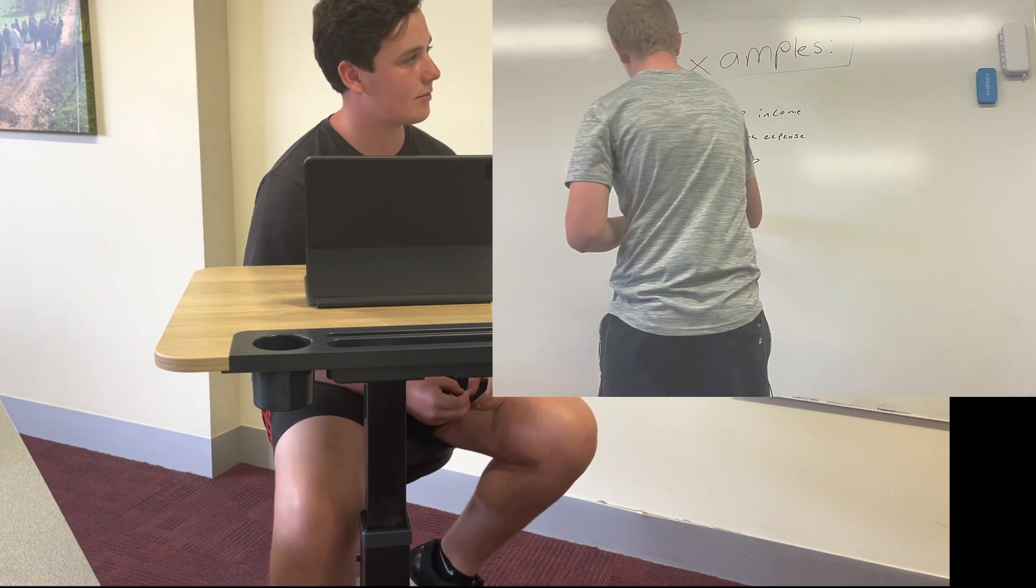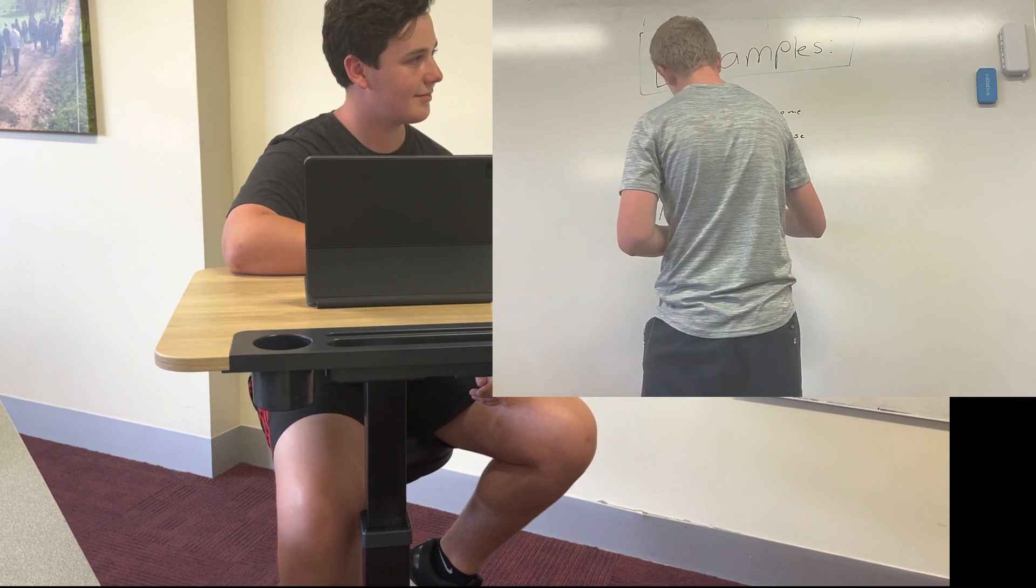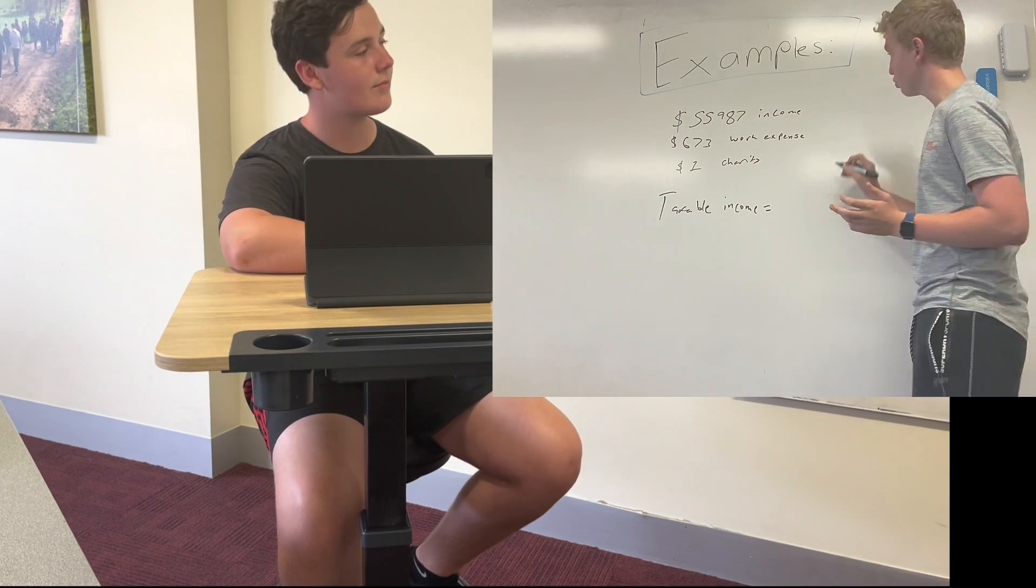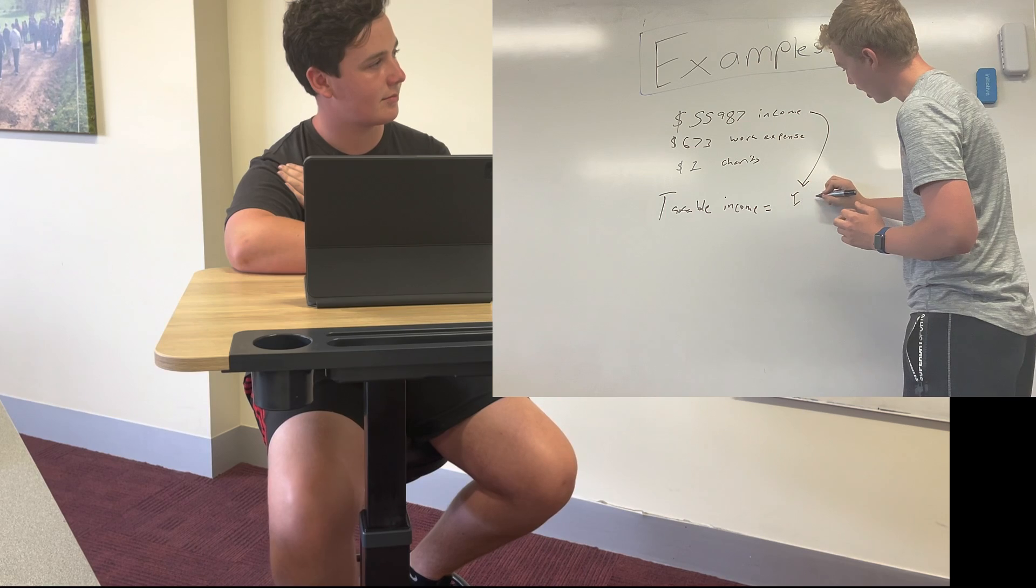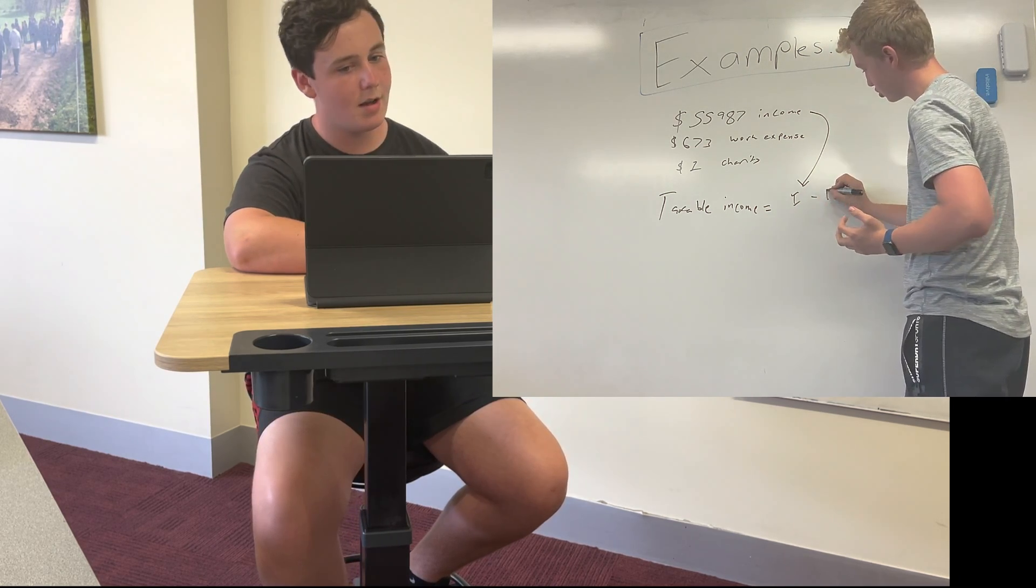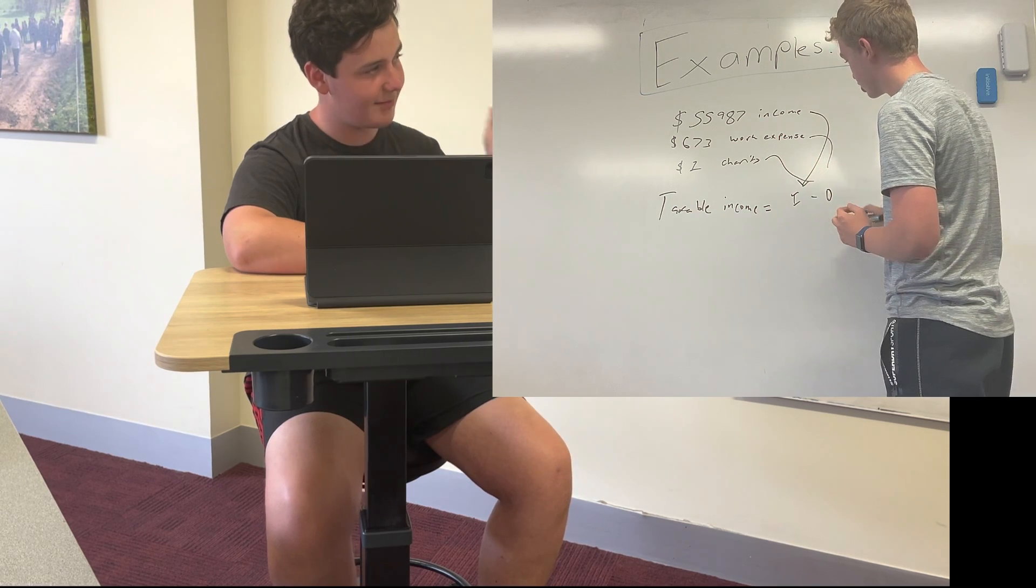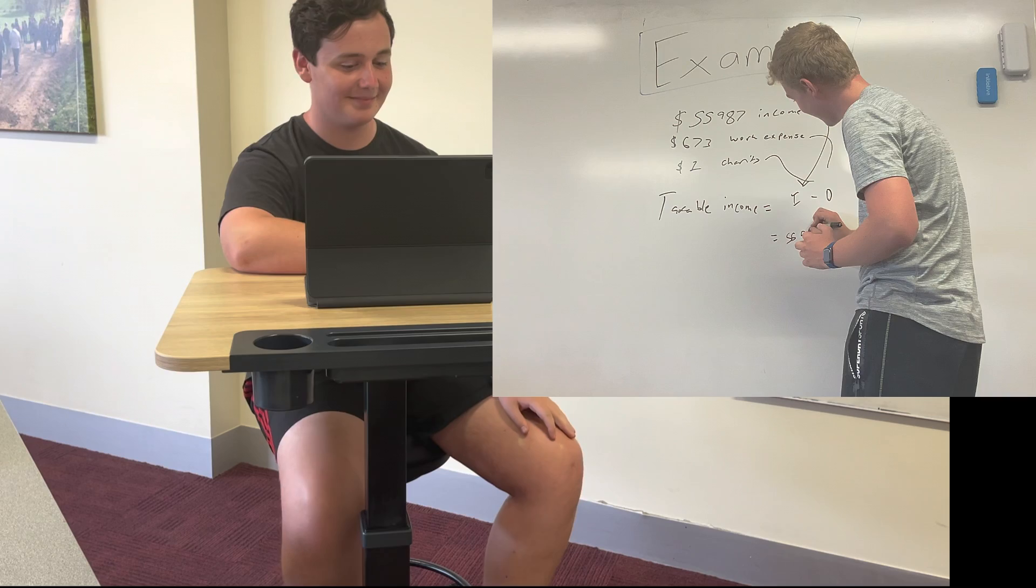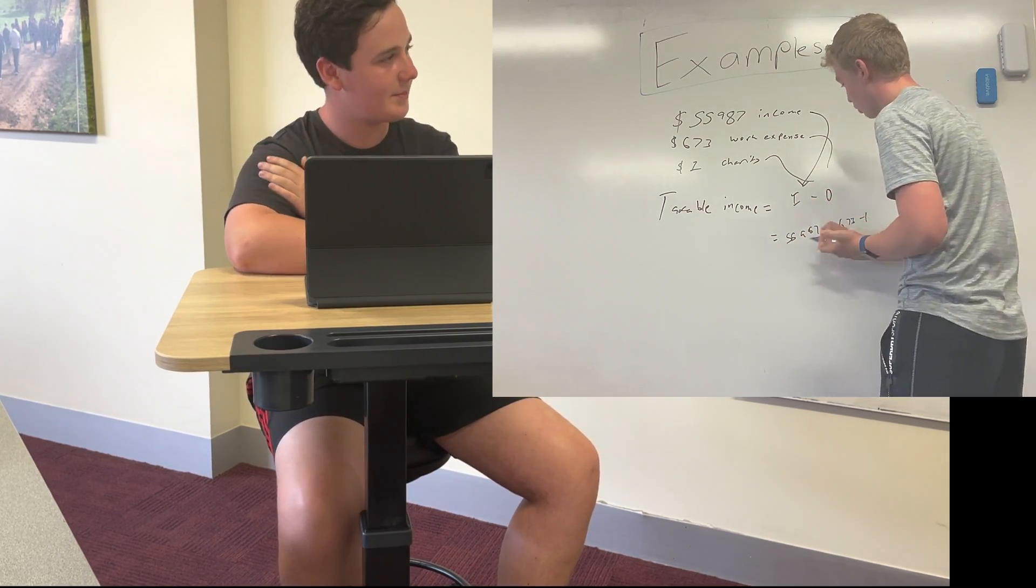Okay so my taxable income here. Basically how we do taxable income is your taxable income equals to your income minus any deductions which is going to be D. So deductions here are work expenses and my one dollar to charity. So here we're going to have $55,987 minus $673 and then also minus one.